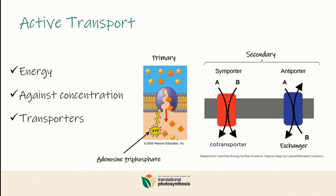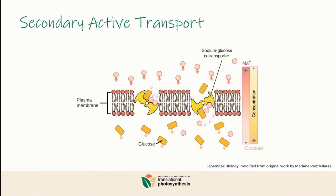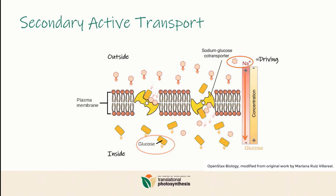Let me explain with an example. If you take the sodium-glucose co-transporter, which moves glucose and sodium inside the cell — as you can see, sodium is more concentrated on the outside of the cell, while glucose is more concentrated on the inside. So sodium will naturally flow from high concentration to low concentration; this is called the driving molecule, and it creates the energy required to move glucose from low concentration to high concentration. We call this the driven molecule.